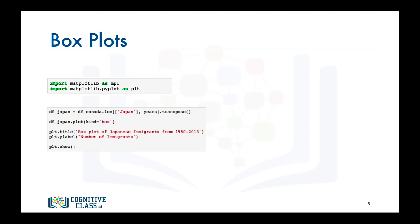Following that, we call the plot function on df_japan and we set kind equals box to generate a box plot. Then to complete the figure, we give it a title and we label the vertical axis. Finally, we call the show function to display the figure.